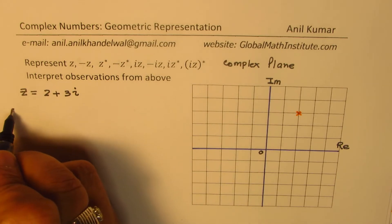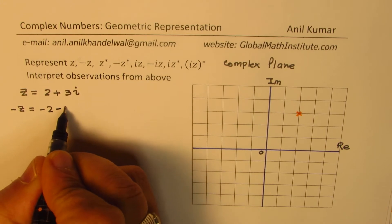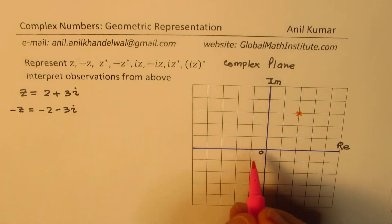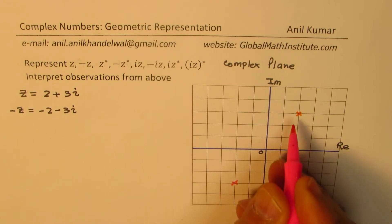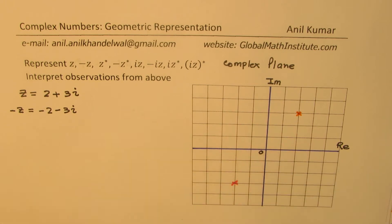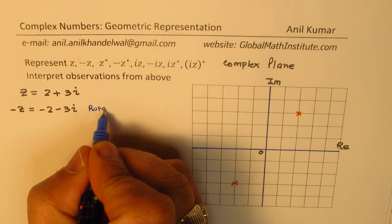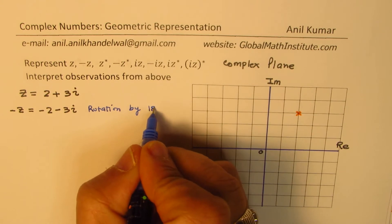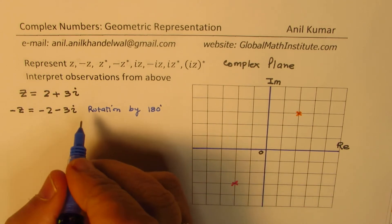If I have minus z, then minus z will be minus 2 minus 3i. That means we go 2 units to the left and 3 units down. What do you notice? It is a rotation by 180 degrees. You can interpret this as a rotation by 180 degrees, or as a reflection about the origin.